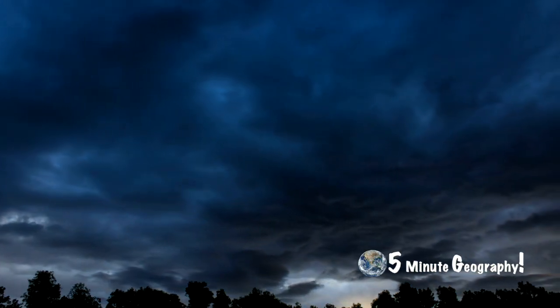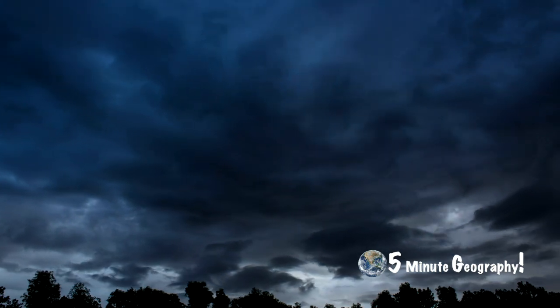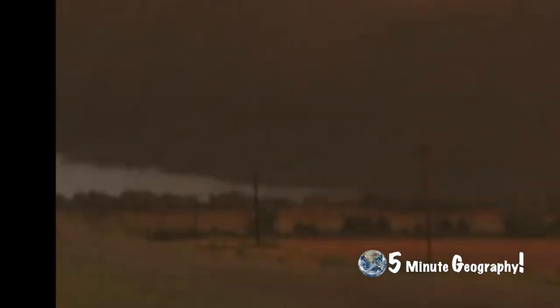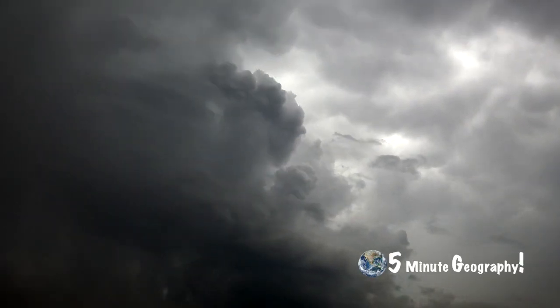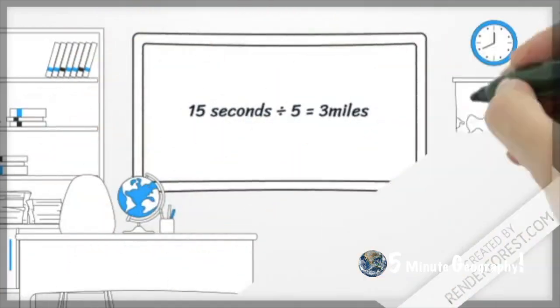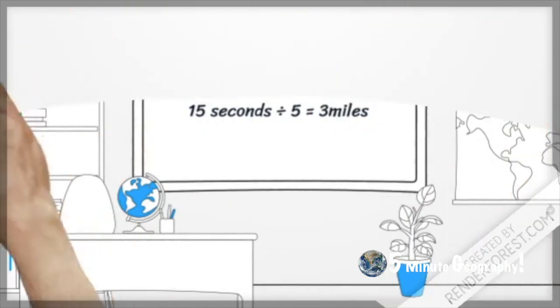You can use thunder to tell you how far away a storm is. The next time you see a storm, count the number of seconds between when you see the lightning and hear the thunder. Take the number of seconds and divide that by 5, and that will tell you how far away the storm is in miles. For example, if you counted 15 seconds between the lightning and the thunder, the lightning would be 3 miles away.